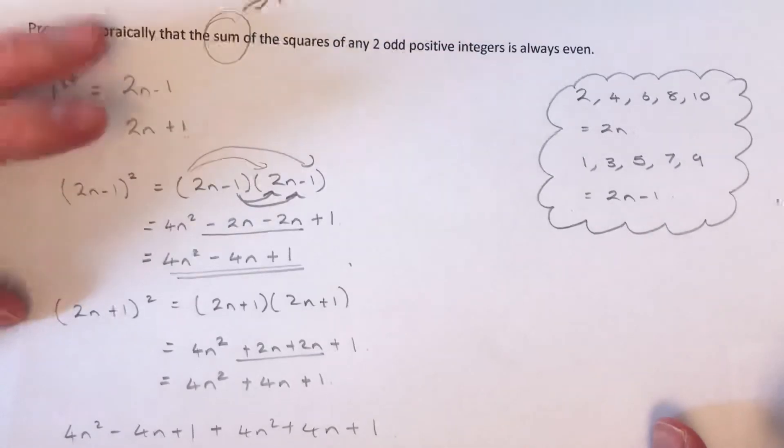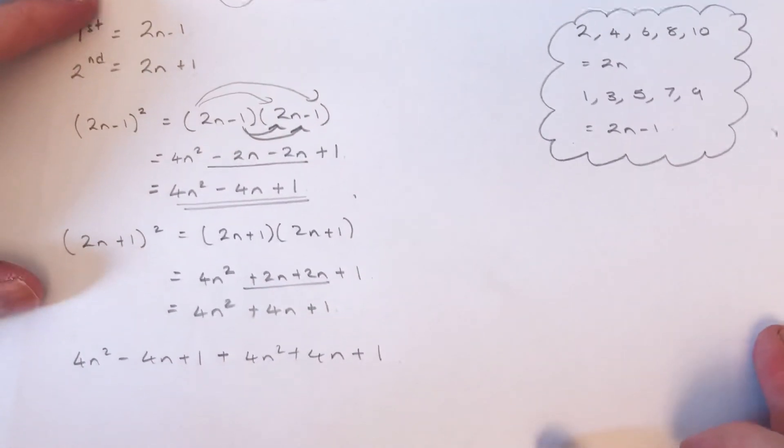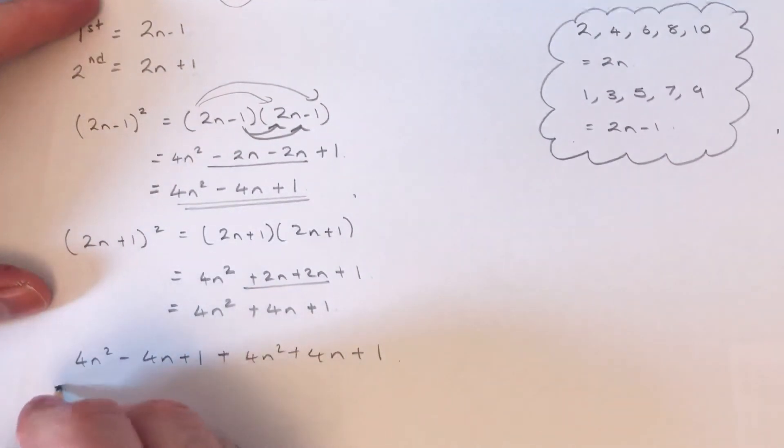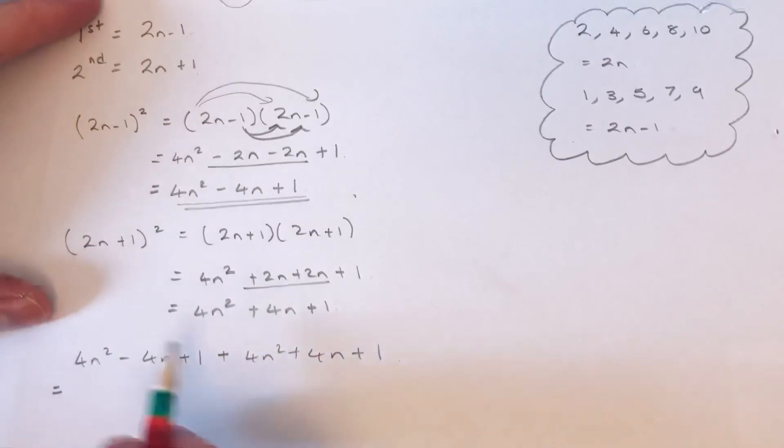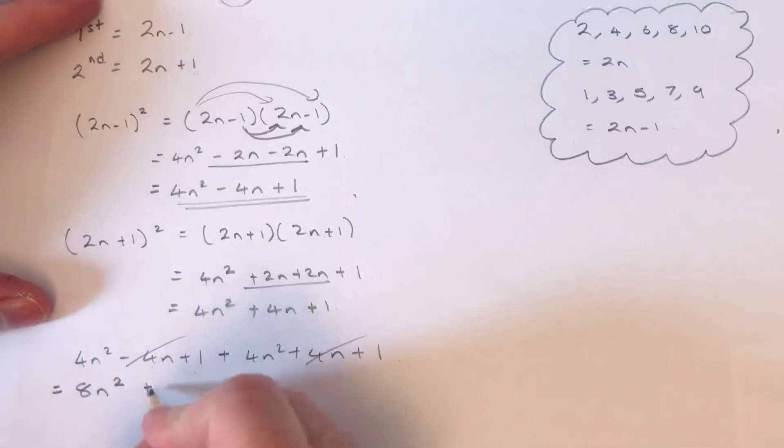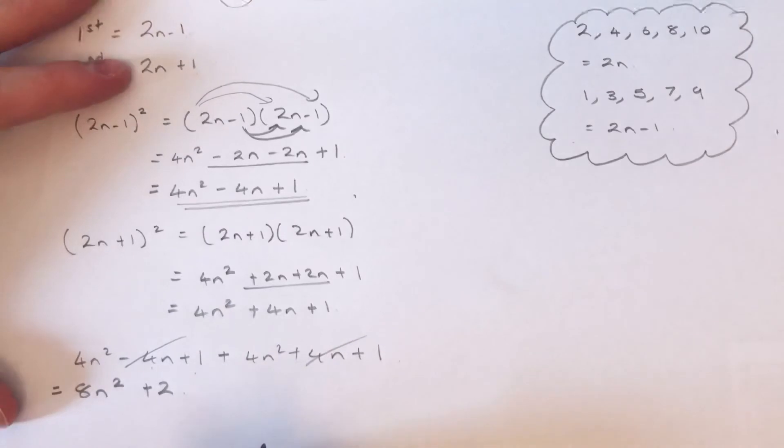Let's just move this up a little bit. Okay, so if we simplify this: 4n squared plus 4n squared is 8n squared. Minus 4n plus 4n, that will cancel out. And 1 and 1 is 2. So we're left with 8n squared plus 2.